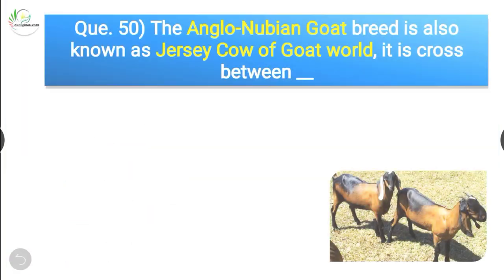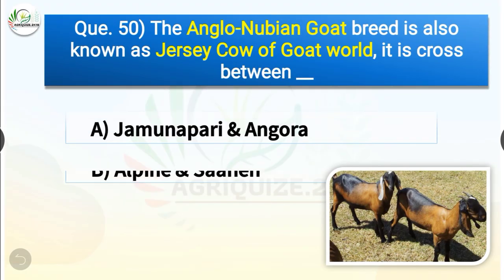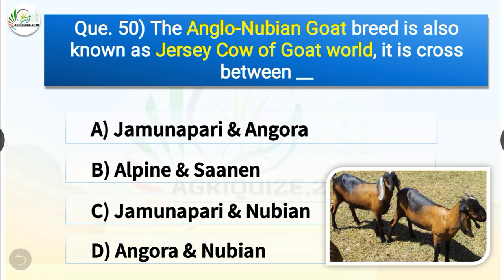Question number 50. The Anglo-Nubian goat breed is also known as Jersey Cow of the Goat World and it is a cross between dash. The options are Jamunapari and Angora, Alpine and Saanen, Jamunapari and Nubian, or Angora and Nubian. The correct answer is option C, Jamunapari and Nubian. So Anglo-Nubian goat breed is a cross between Jamunapari and Nubian.